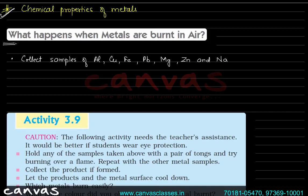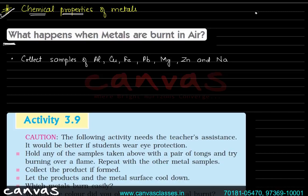First, let's understand what chemical properties mean. Any property which involves a chemical change — for example, if something burns in the presence of air, that is a chemical change. If some substance reacts with water, with acid, or with base, wherever the chemical composition changes, that particular process is called a chemical reaction.